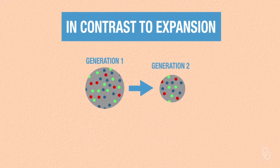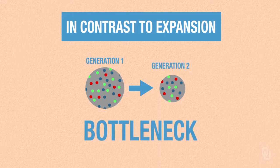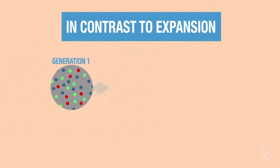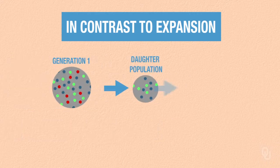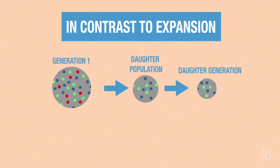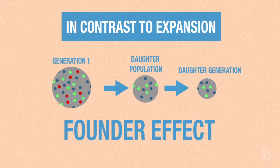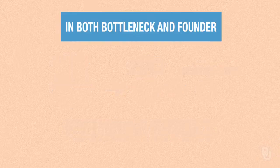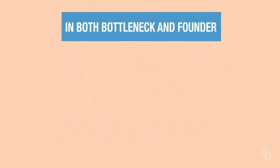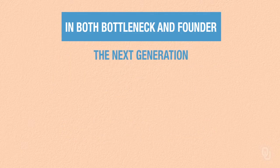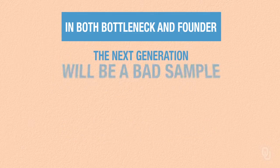If a population declines, it's called a bottleneck. If a smaller daughter population branches off to found a new population, it is called a founder effect. In both bottlenecks and founder effects, the next generation will be a very bad sample of the parental diversity.